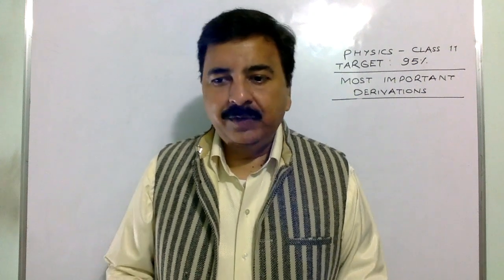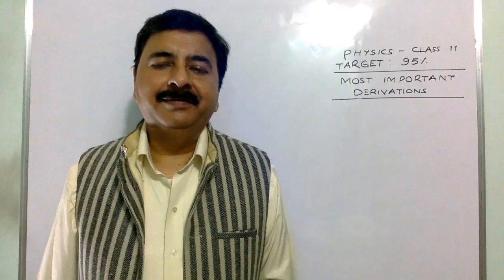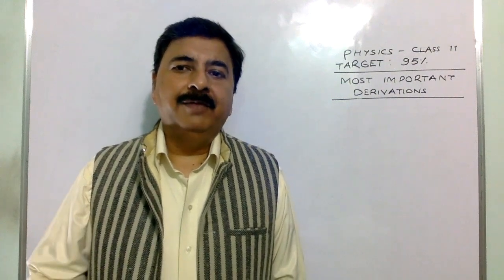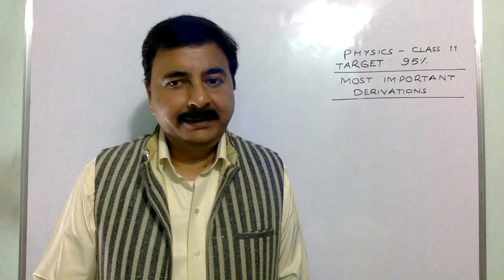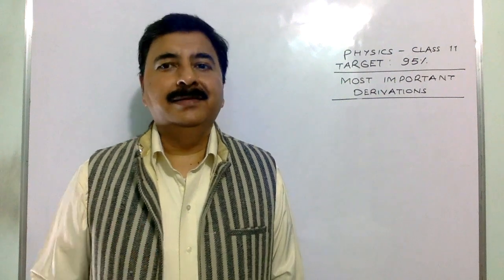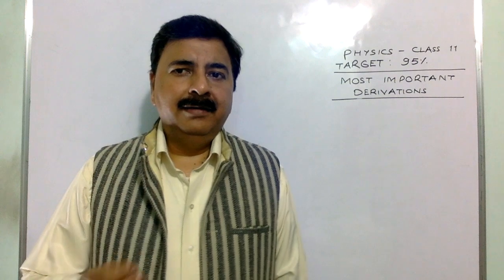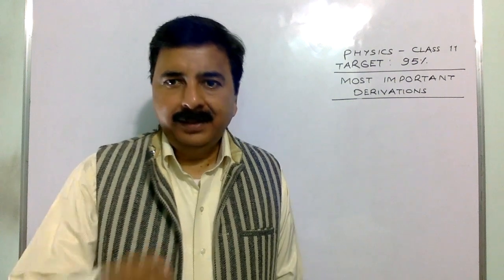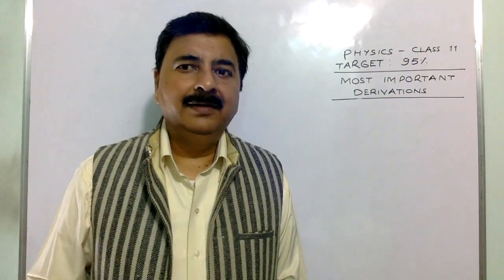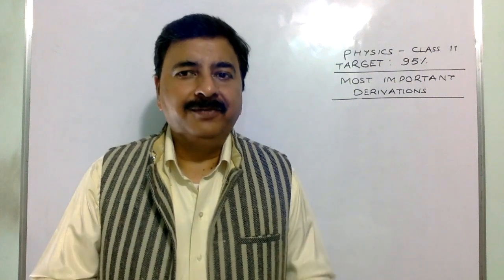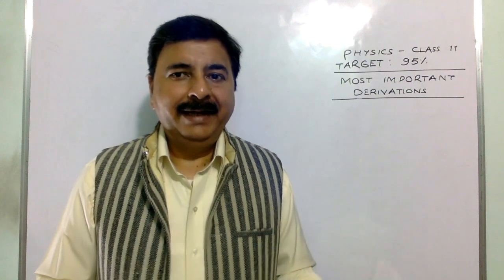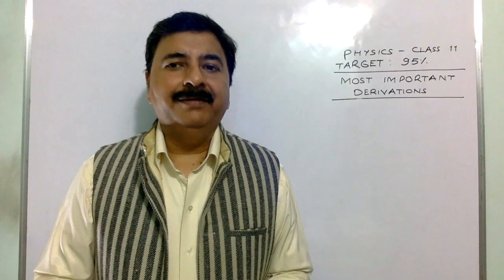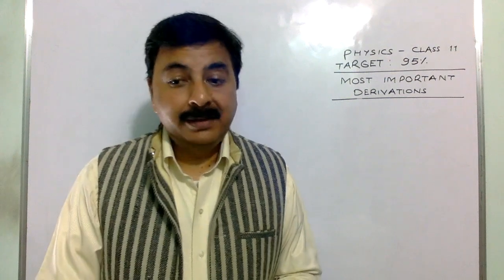Derivation number 7, again a sure derivation, is from work, power, and energy: elastic collision in one dimension with special cases. It's a challenging derivation; you should practice it twice. I think this single video of around 15 minutes will increase your percentage by at least 15%. If you were supposed to get 80%, with this you will get 95%. But don't miss a single derivation.